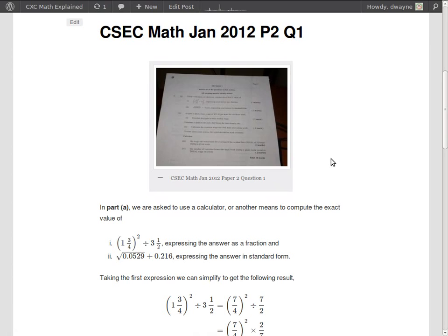Hey guys, welcome back. So in the last video I did question 1 part A part 1. In this video I'd like to do question 1 part A part 2. That question asked to calculate using a calculator the exact value of the square root of 0.0529 plus 0.216, expressing our answer in standard form.